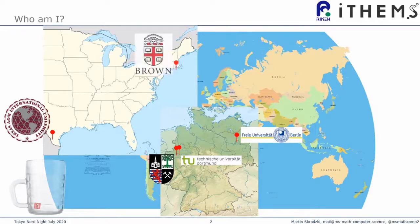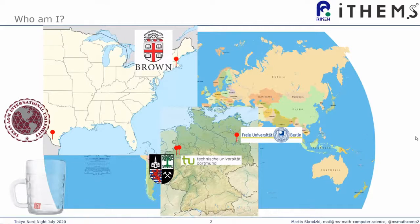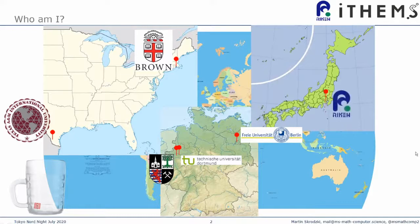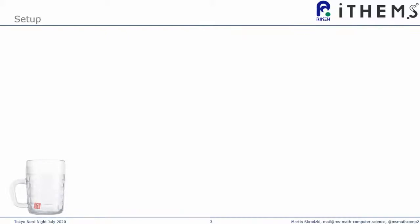After the PhD, I quickly jumped back to the States again to Brown University for a quick postdoc. And currently I'm at the RIKEN Research Institute in Wako, Saitama, Japan, where I'm for my second postdoc in the Interdisciplinary Theoretical and Experimental Mathematics and Sciences Group. All right. So without further ado, let's get into today's topic.